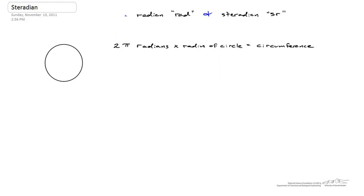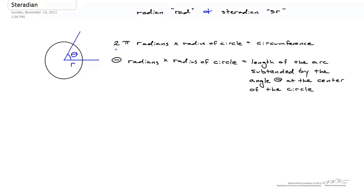You're familiar with the idea of a radian. We know that there are 2π radians. If we take 2π radians and multiply by the radius of a circle, we'll come up with the circumference of that circle. If we wanted to figure out the length of an arc, we take some angle at the center of the circle and multiply this angle in radians — theta radians — by the radius of the circle, and you'll come up with the length of the arc subtended by the angle theta at the center of the circle.